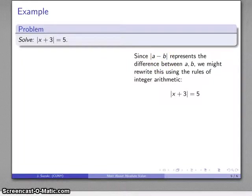So I have x plus 3 and I can change that to x minus negative 3 is equal to 5. And now I have something I can understand. This is telling me the difference between whatever x is and negative 3 is going to be 5.